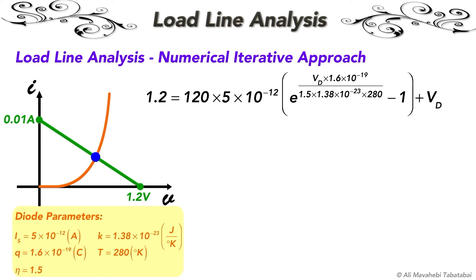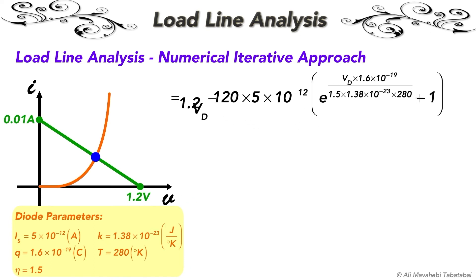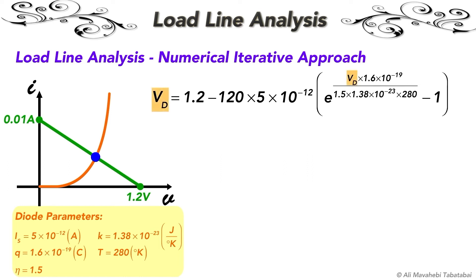As an example for the previous circuit which we solved graphically, if I take this part of the equation to the right side, I will have two expressions and the only variable is the diode voltage. I will create a table with three columns.